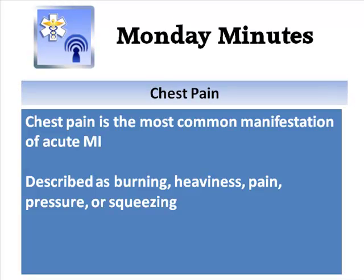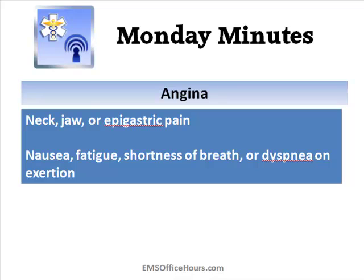So we talk about chest pain — the most common thing you're going to see in an acute MI. They're going to be complaining about discomfort. They may describe it as burning, pain, heaviness, pressure, or even squeezing. Now, you might have angina equivalents, and that can include things like neck pain, jaw pain, or epigastric pain. The patient might also be complaining of nausea, being tired, or some shortness of breath, even on exertion.